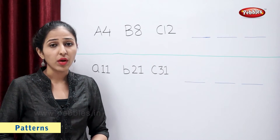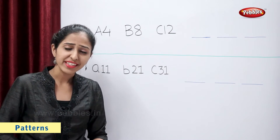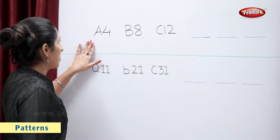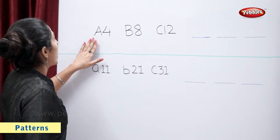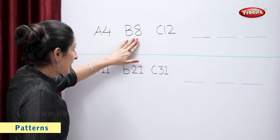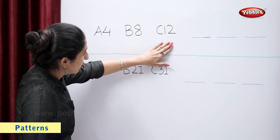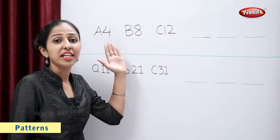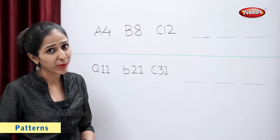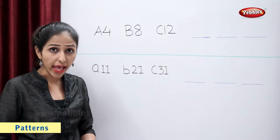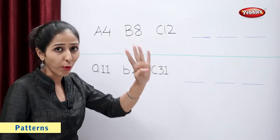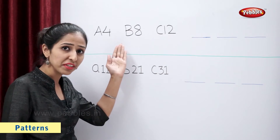Let's take some examples with numbers and letters. In this example, we have A4, B8, C12. The letters in this example follow a sequence and there is a difference of 4 between these numbers.